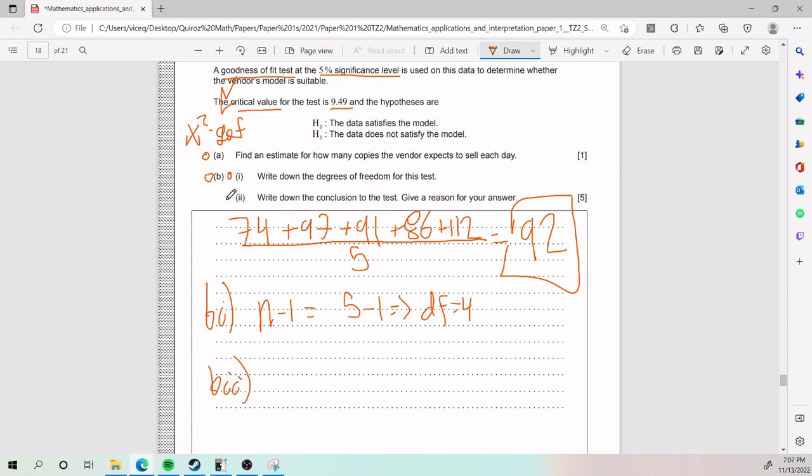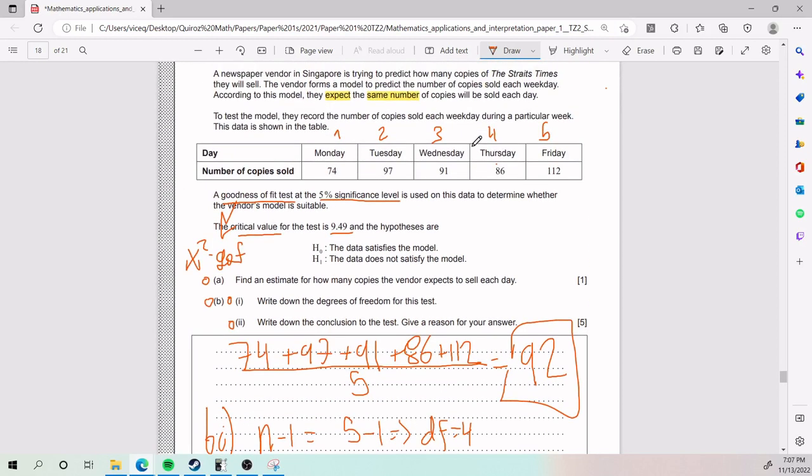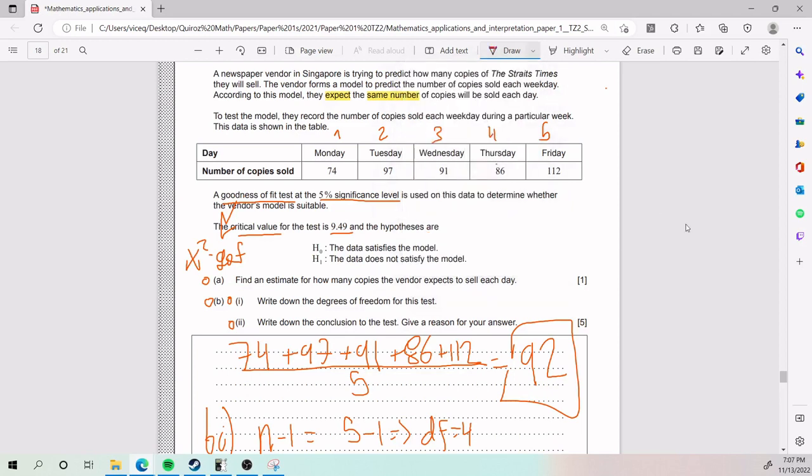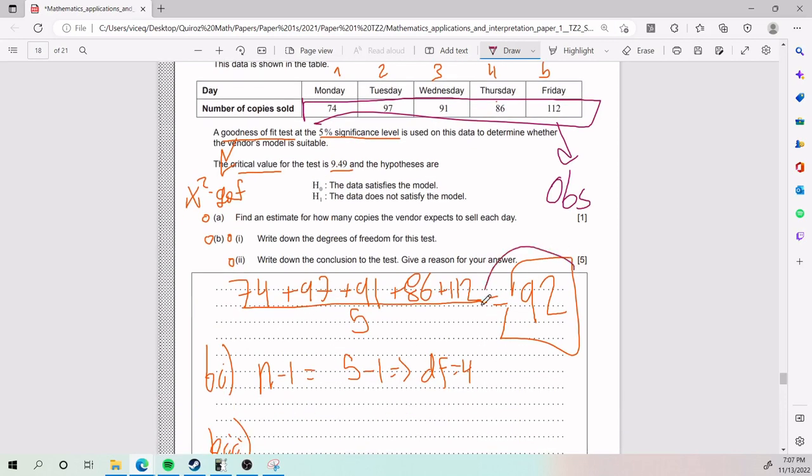Part B, part ii is where it gets juicy. We need to write down the conclusions for this test and give a reason for our answer. So it's very important to make a difference between observed and expected values in this case. As we've seen, this right here are our observed values. Which means that our expected values is for the same number of copies to be sold each day. This is going to be expected, same amount of copies. What number will that be? It will be this number here, 92, because it's the estimate that we did earlier.